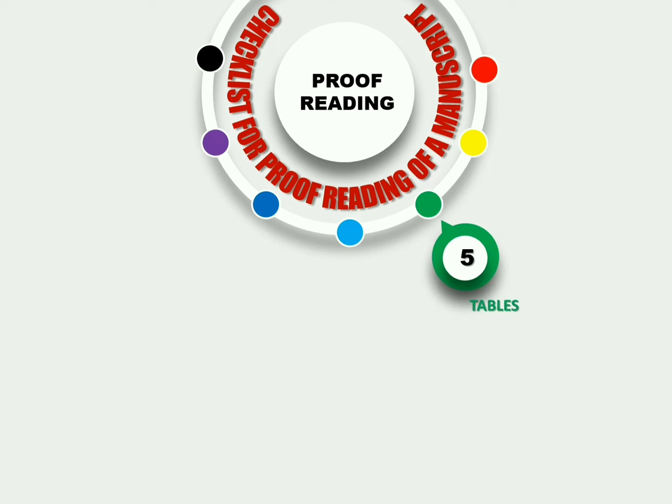The fifth point of consideration is table format. A good alignment with the page, uniform font size, and font type should be important criteria for better readability of tables. Table legend should also be checked for its appropriateness. It should be concise and self-explanatory.